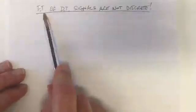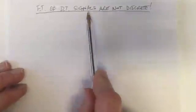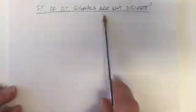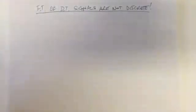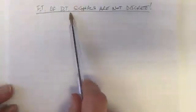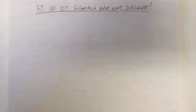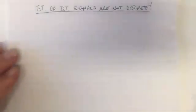Let's think about the Fourier transform of discrete time signals. The point I want to make is that those Fourier transforms are not discrete. It's tempting to think that if you have a discrete time signal, you would have a discrete Fourier transform. But that's not the case — it's a common mistake.